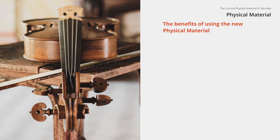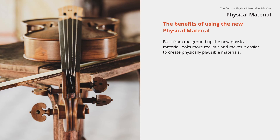What are some of the more tangible benefits of using the new physical material? The new physical material is built from the ground up, looks more realistic, and makes it easier to create physically plausible materials as well. Let's get even more specific: one of the main benefits is the overall greater realism you'll get. The new physical material uses an Oren-Nayar diffuse BSDF under the hood, which means that the way light interacts with the material will be different than with the previous material — and by different, we mean improved.